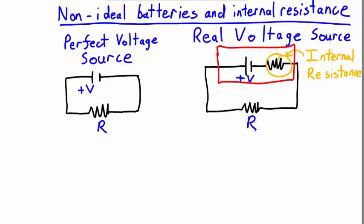However, when R is large compared to the internal resistance, then these two circuits pretty much behave in the same way.